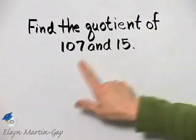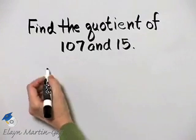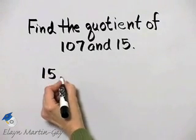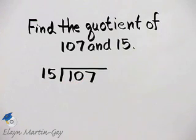So if I'm finding the quotient of 107 and 15, I want to know how many times does 15 divide into 107? I'm finding the quotient of 107 and 15. So let's divide.